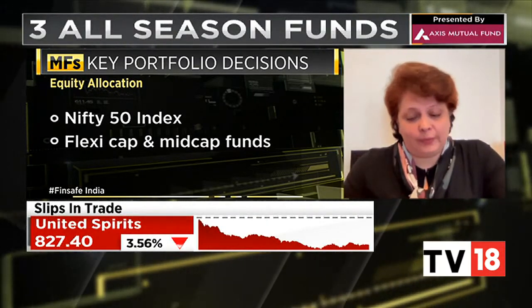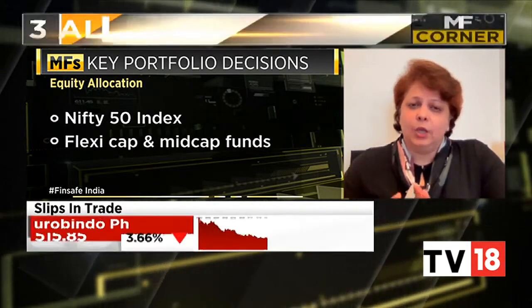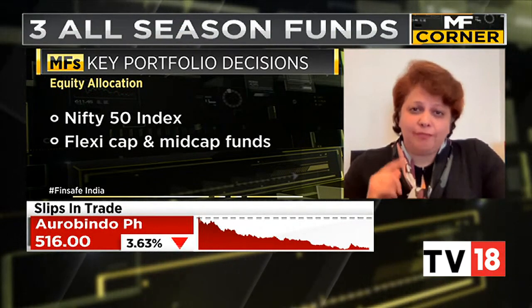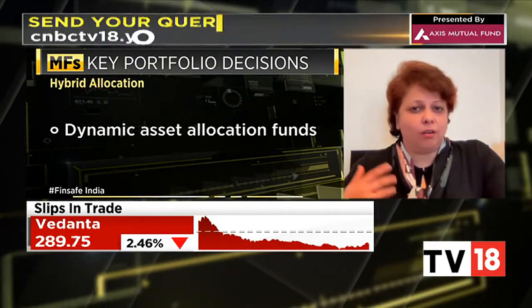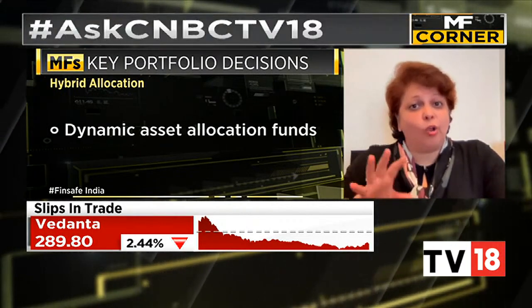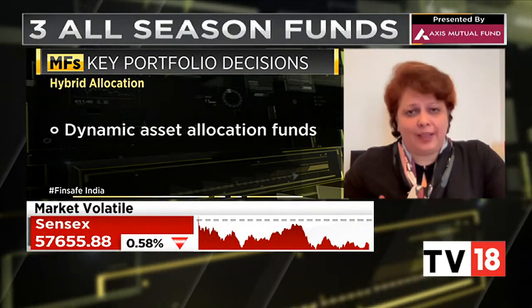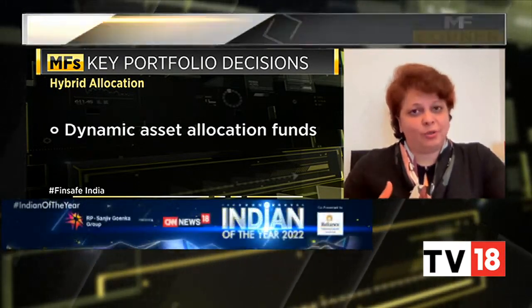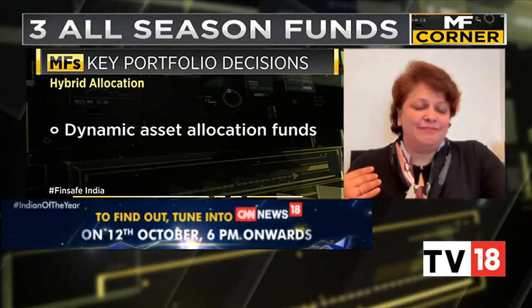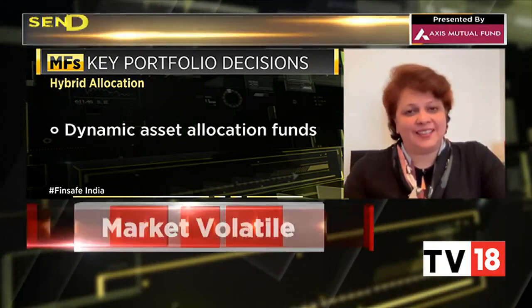For investors who are conservative and want to take the balanced route, there are both aggressive hybrid funds and balanced advantage funds, also known as dynamic asset allocation funds. I like the dynamic asset allocation funds, although they will give you a lower return, because they do regular profit booking for the client. I prefer those over the aggressive hybrid equity fund. To sum up: ultra-short-duration debt fund, short-duration debt fund, the Nifty 50 index fund, Flexicap fund, mid-cap fund, and dynamic asset allocation fund.